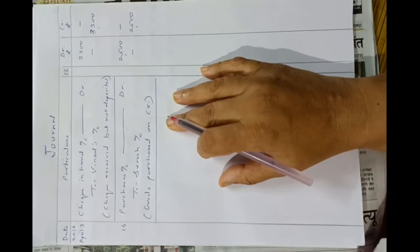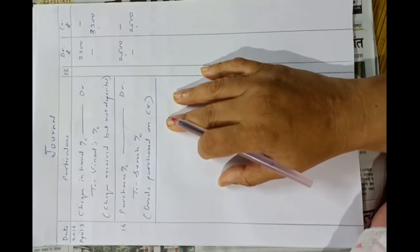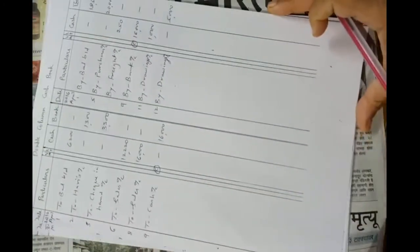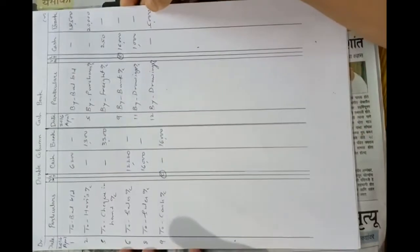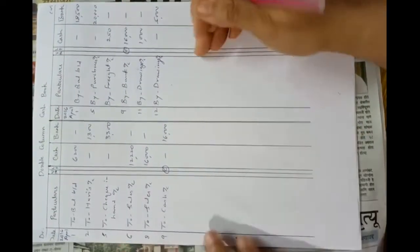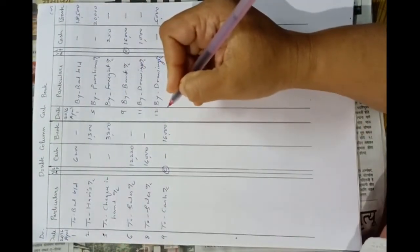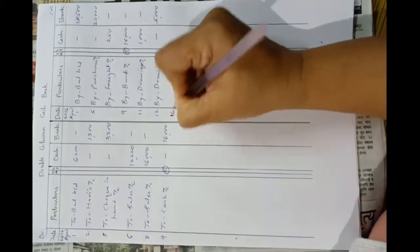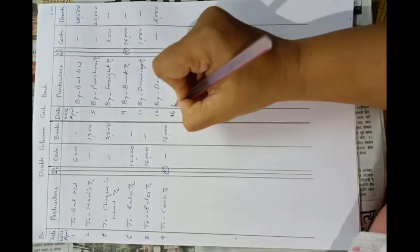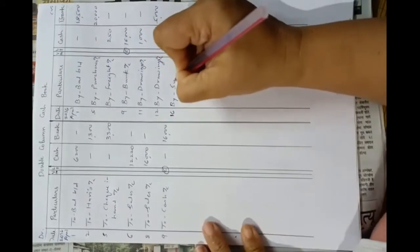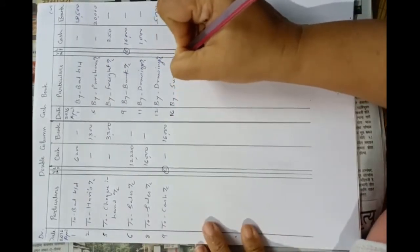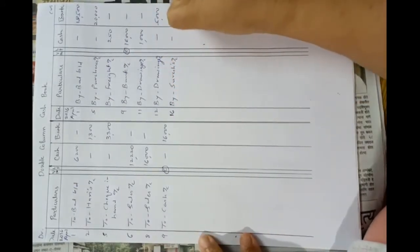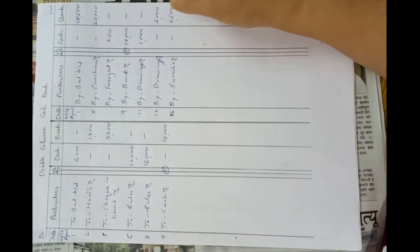On 16th, paid to Suresh by check Rs. 2,500. The payment entry will be entered in the cash book on 16th: by Suresh's account, Rs. 2,500 in bank column, as payment was made by check.